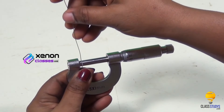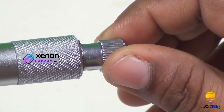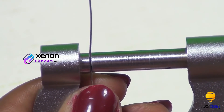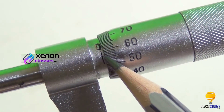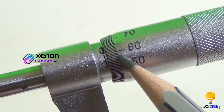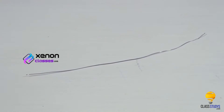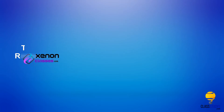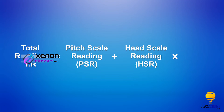Place the given wire between the tip of the screw and stud by tightening the ratchet. Note down the pitch scale reading and head scale reading. The diameter of the wire can be calculated using the relation: Total Reading (TR) equals Pitch Scale Reading plus Head Scale Reading multiplied by Least Count.